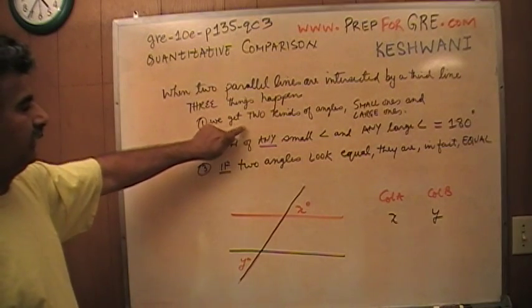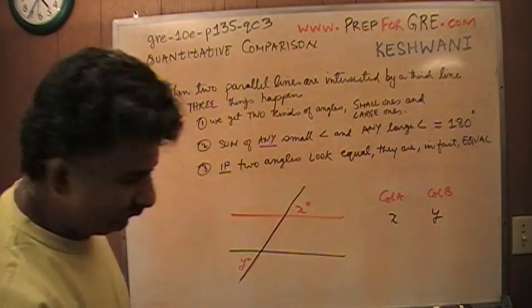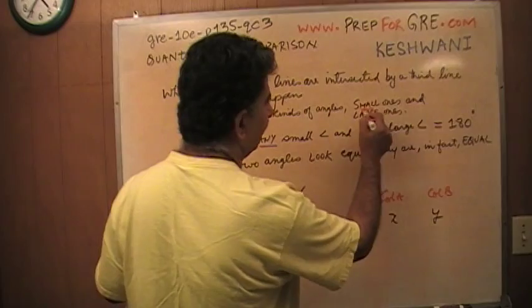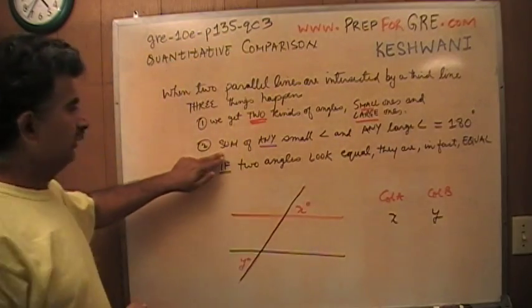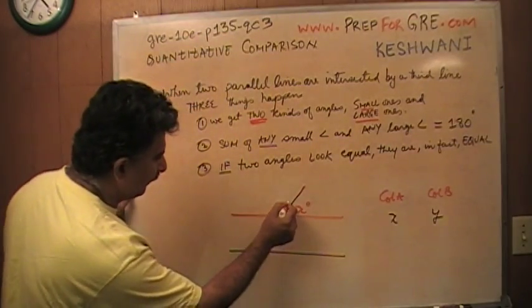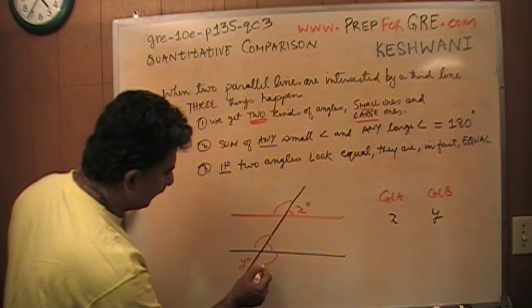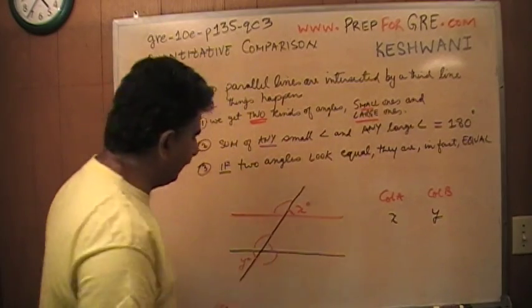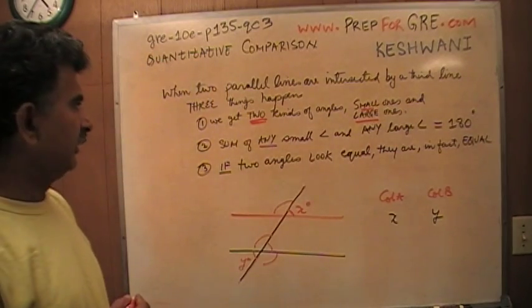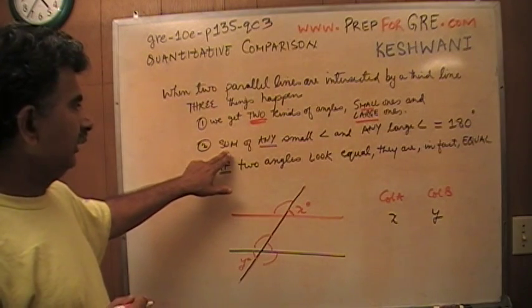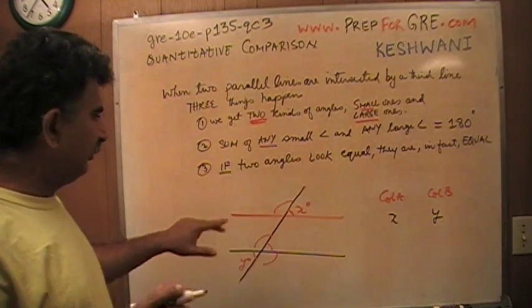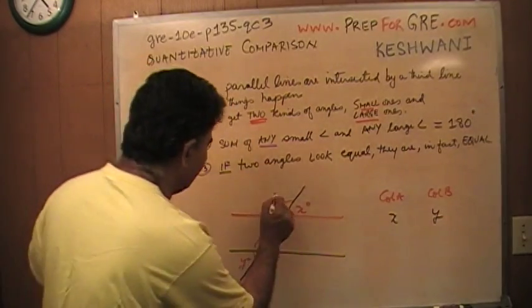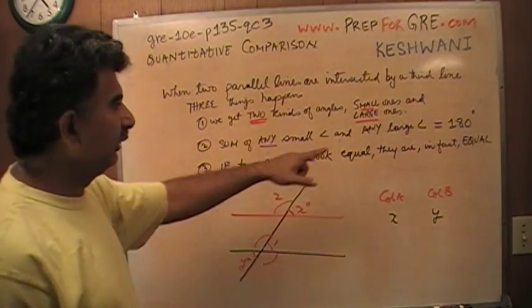Number one, we get two kinds of angles. Small ones and large ones. As you can see, this is a small angle, this is a large angle. A small angle, a large angle, a large angle, a small angle. You can readily see which one is a small angle and which one is a large angle. Forget about the terminology. Number two, the sum of any small angle, for example, let's call this angle one and any large angle, let's call this angle two, the sum of this angle and that angle equals 180.